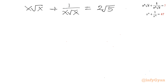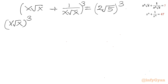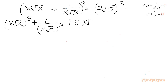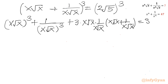Again I will cube both sides of x√x + 1/(x√x) = 2√5. Using (a + b)³ = a³ + b³ + 3ab(a + b): (x√x)³ + (1/(x√x))³ + 3·(x√x)·(1/(x√x))·(x√x + 1/(x√x)) = 2³·(√5)³. The right hand side is 8·5√5 = 40√5. The 3ab term gives 3·1·2√5 = 6√5.